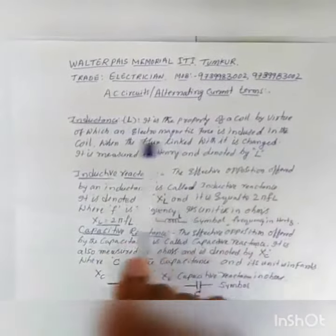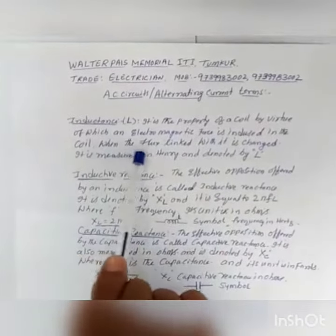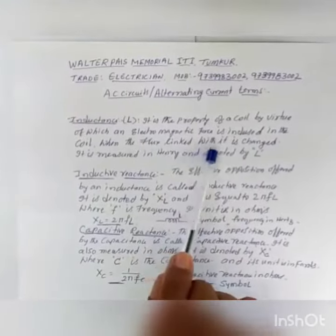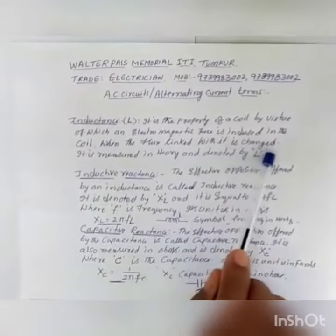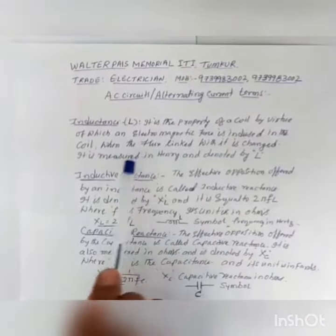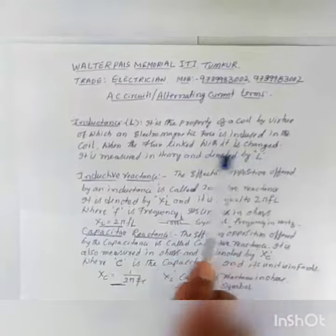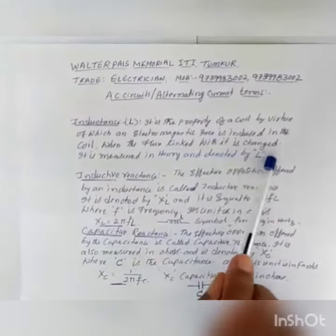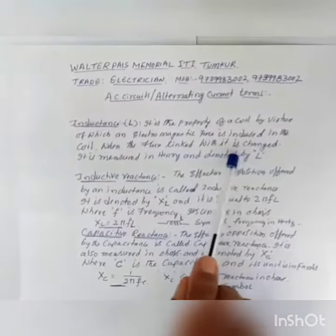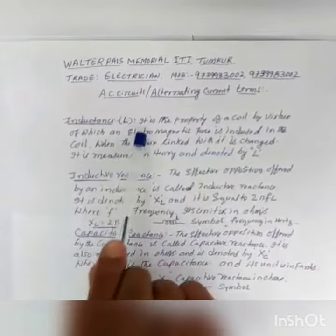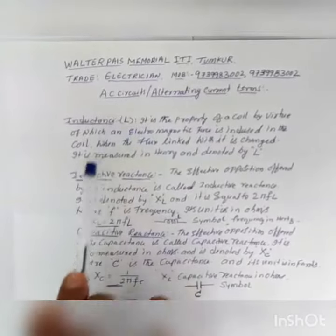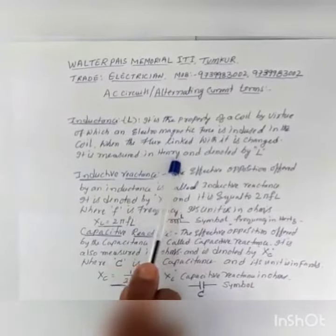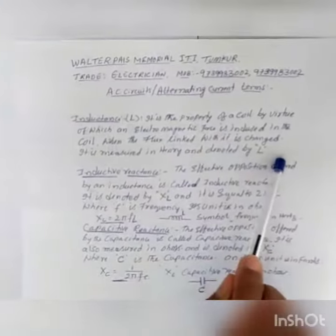In the coil, when the flux linked with it is changed — that means current variation — that flux is related to the flux. Inductance is measured by N and denoted as L.